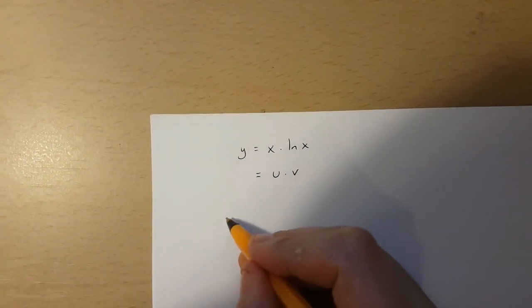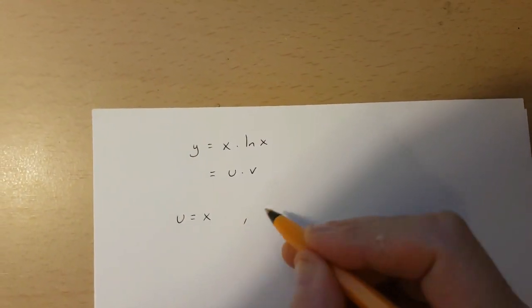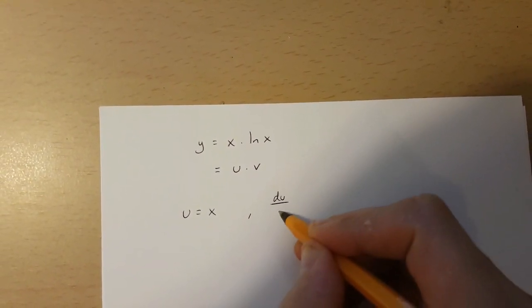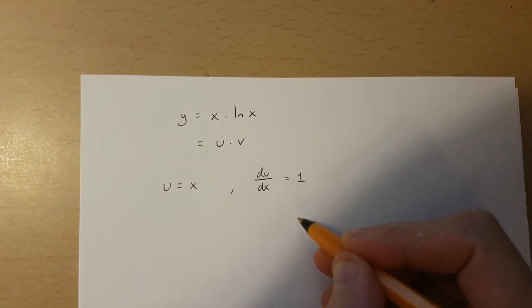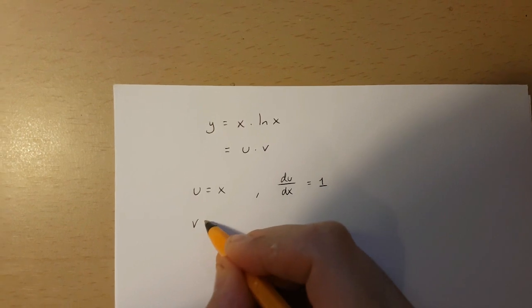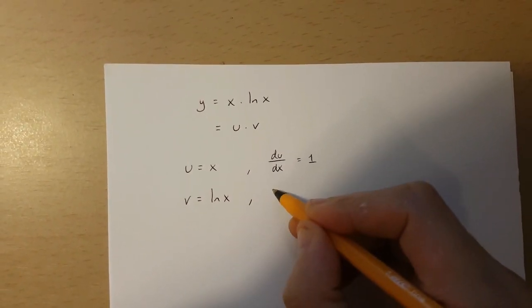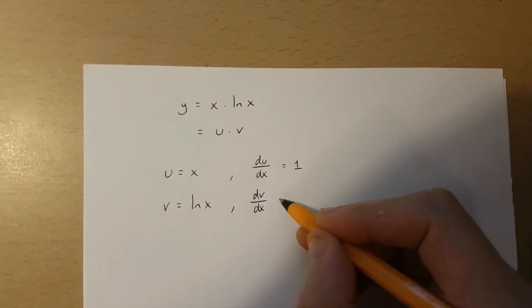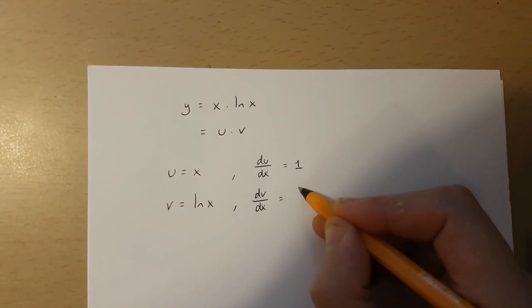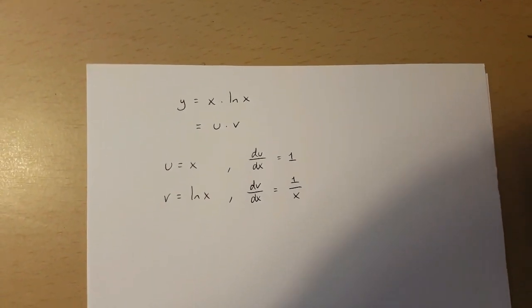Now, if u is x, then du over dx is going to be equal to 1. If v is ln x, then dv over dx is going to be equal to 1 over x.